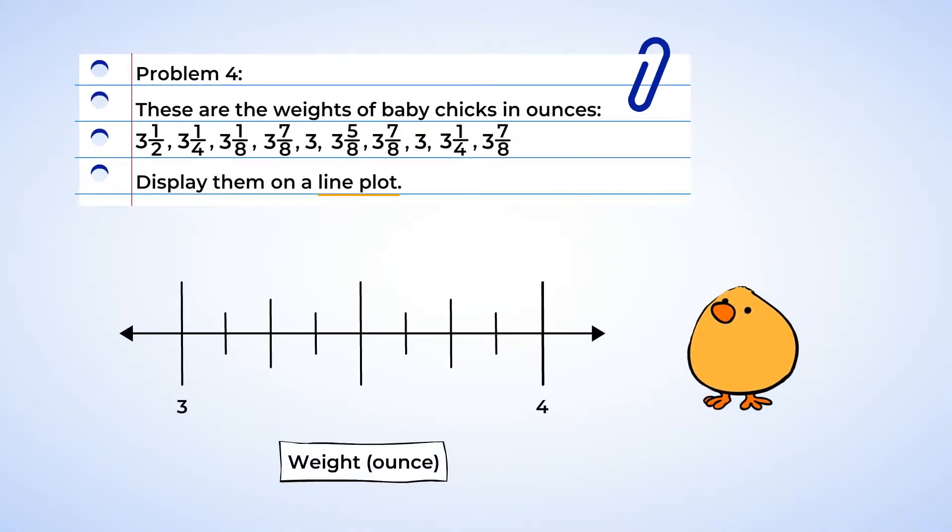Now, let's plot the points. Three and one half. Okay, here's the half tick mark between three and four, and we can plot three and a half here. Next, three and one fourth.